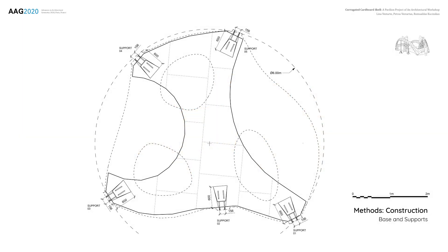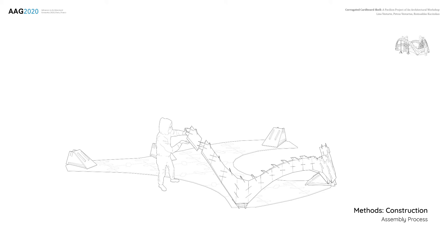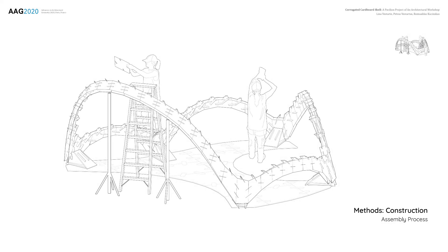The base and supports were custom designed and fabricated using a three-axis CNC milling machine from 18mm MDF boards. First, the base and supports were put in place. Then, following the sequential labeling order, the five stiffened boundary arches were assembled to convey the loads to the supports. The balance of the structure was secured using temporary supporting posts, but no need for heavy scaffolding arose.